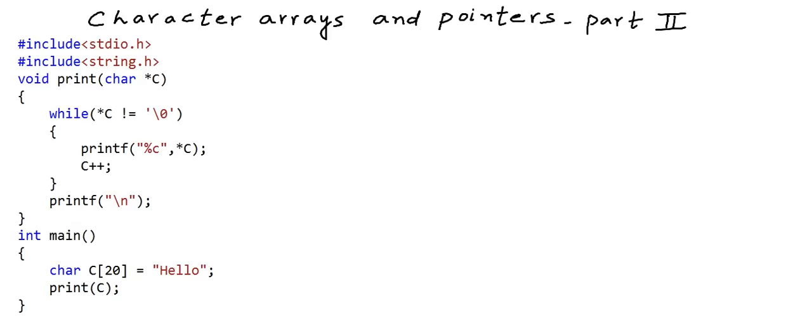This is where we had left in our previous lesson. We have written a function print to print the characters in a string. In the main method, we have a character array of size 20 but we have stored a string of length 5 in it. We have used a string literal, so null termination is implicit. We have talked about this earlier. So let us step through this code and see how it is working.